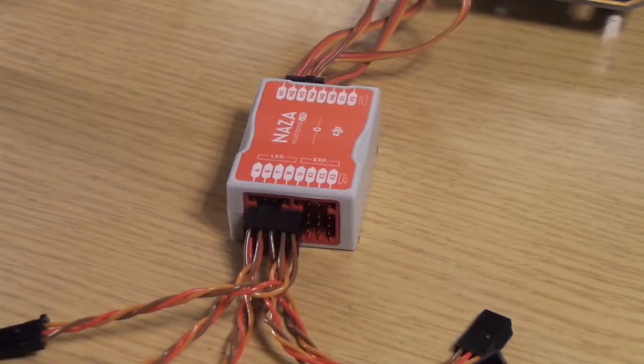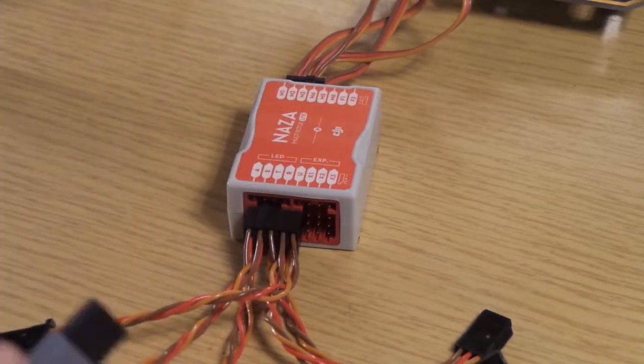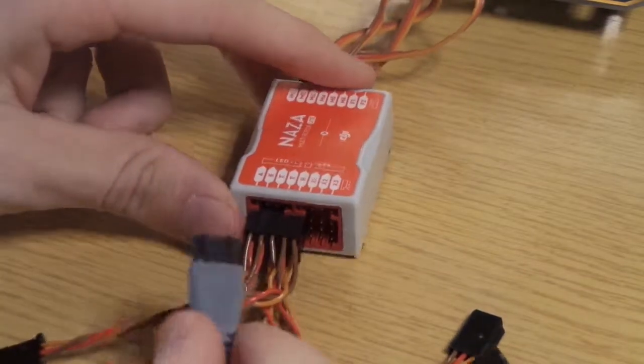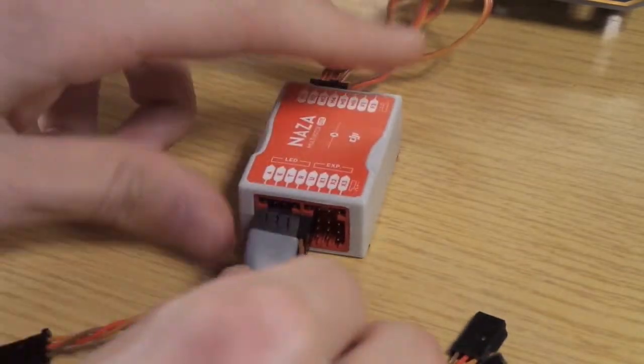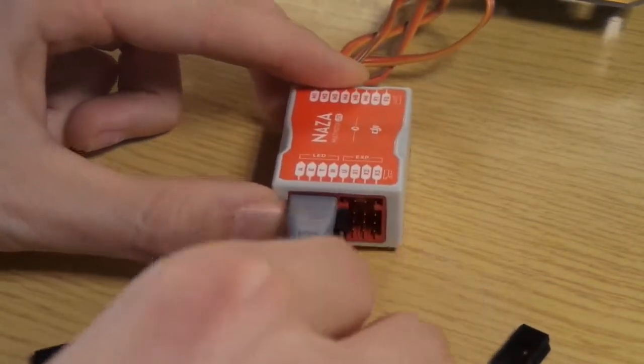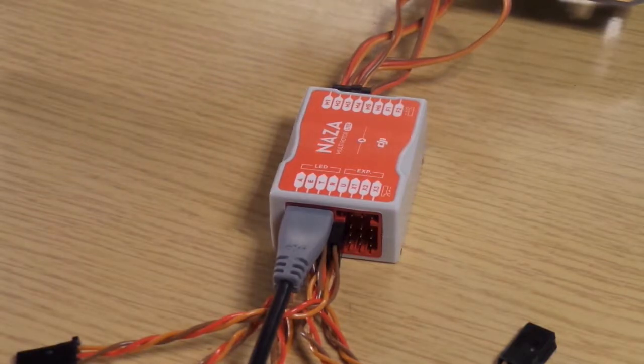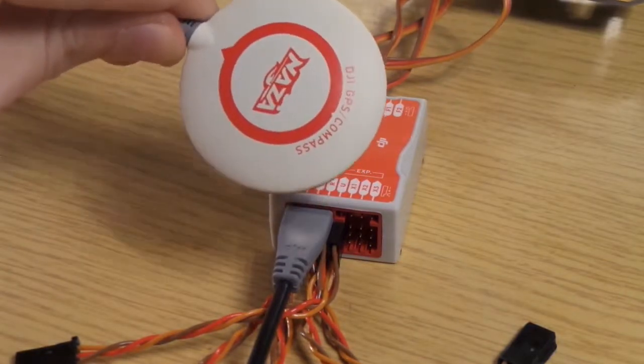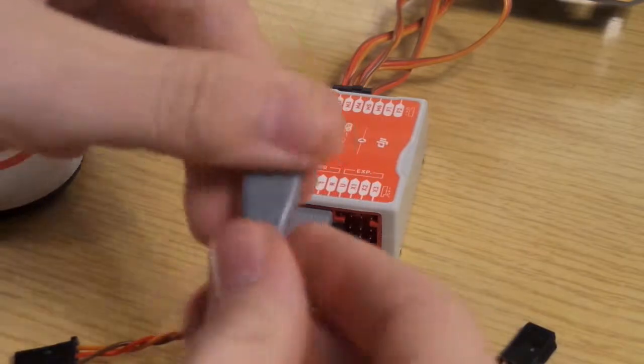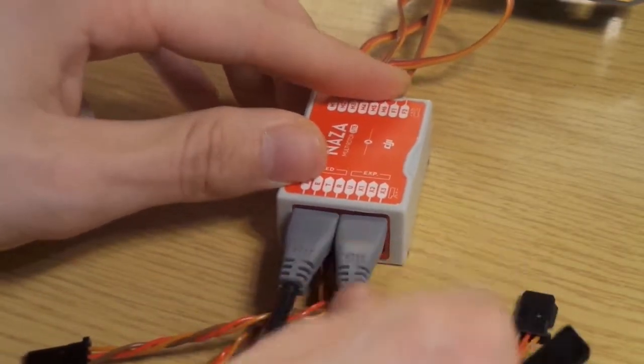Then we take the LED and we attach the LED over the receiver cables. There is written LED on the top of the flight controller. And then we take the GPS unit and we power it into the flight controller where there is written expansion.